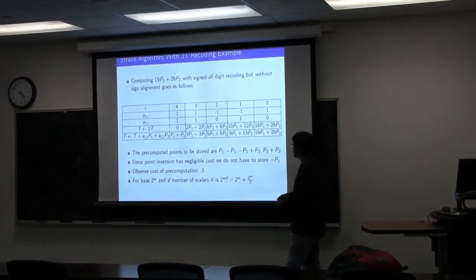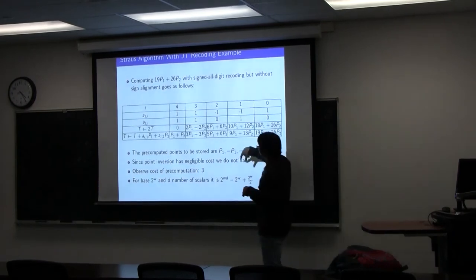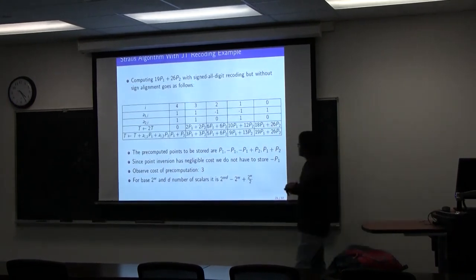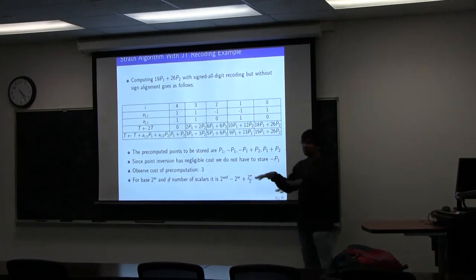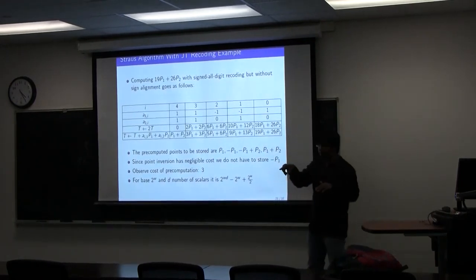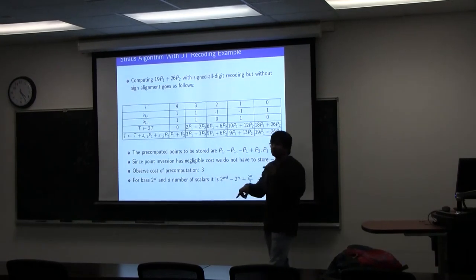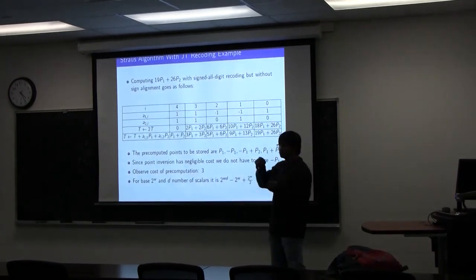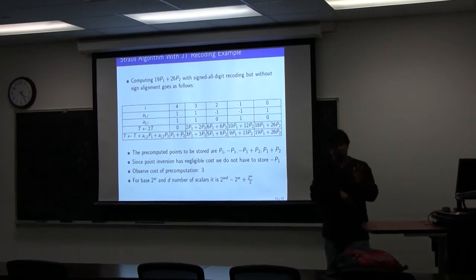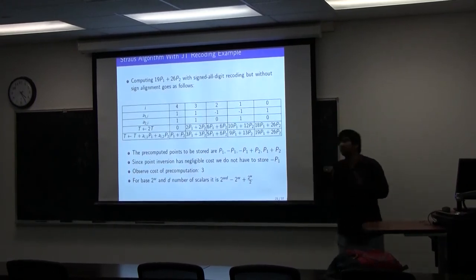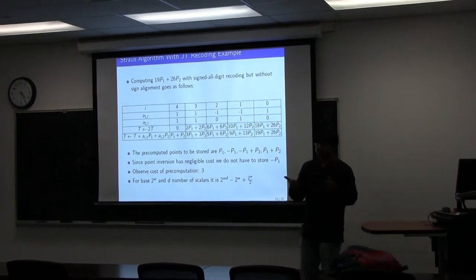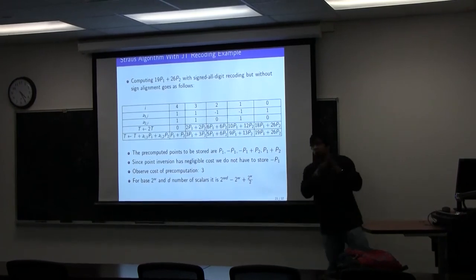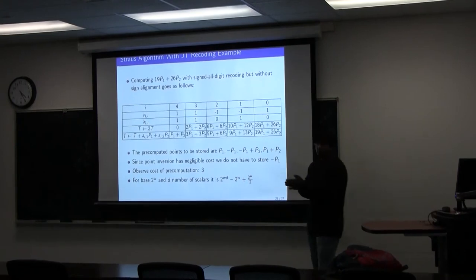Now negative numbers are coming into play, so I need to store not just P1+P2 but also P1−P2. However, if I store P1, I do not need to store −P1, since inversion is free. If I store P1+P2, I do not need to store −P1−P2. But I do still need to store P1−P2 and −P1+P2, which increases storage.